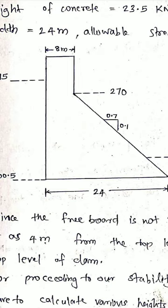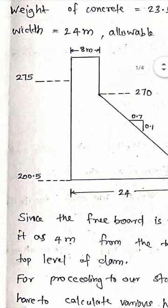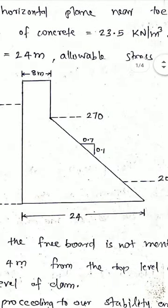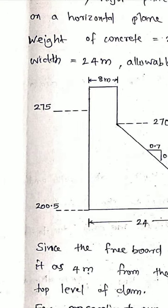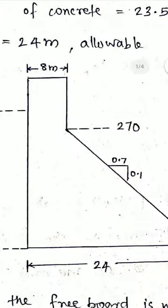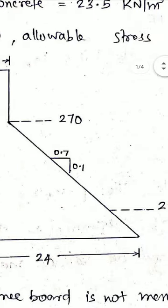The top is a free board. The top width of the dam is 8m, marked here. The upstream side bottom level is 3m. This is a free board for maximum water level. The figure shows the inclination starting at the downstream phase — the inclination starts at level 271.